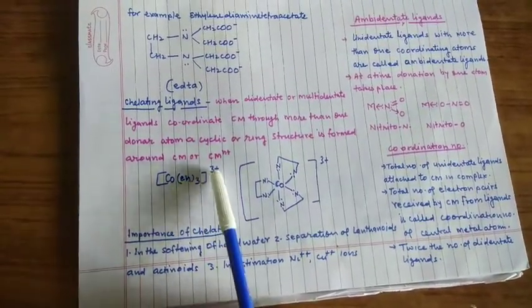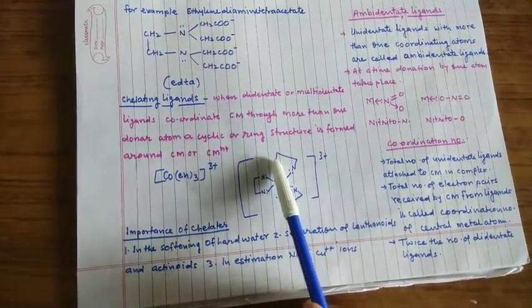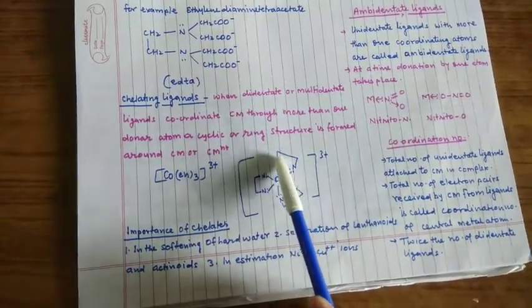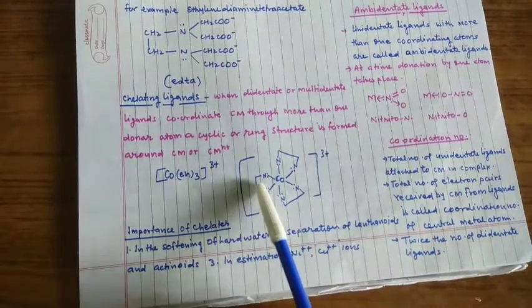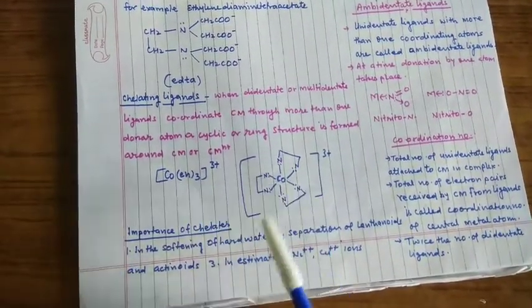जैसे [Co(en)3]3+, EN मतलब ethylene diamine। Ethylene diamine को इस तरह से abbreviate करते हैं band line formula। हर ethylene diamine में दो nitrogen donor atom होते हैं। तो जब तीनों ethylene diamine के दो दो nitrogen एक साथ donate करेंगे।